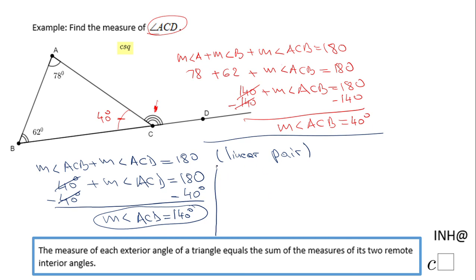So what do we mean by that? In this case, the measure of angle ACD, the exterior angle of the triangle, equals the sum of the measures of the remote interior angles: measure of angle A plus the measure of angle B. So we're going to plug those two values, 62 and 78.